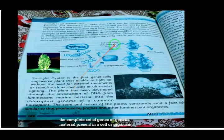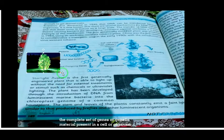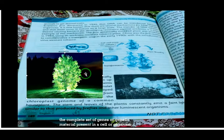In part one, we start with a reading about the first genetically engineered plant, the 'Starlight Waiter.' This plant was the first to be genetically engineered — it was developed and brought to light through cool and pioneering work.